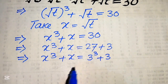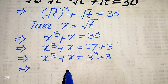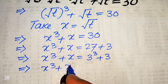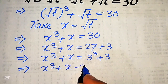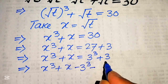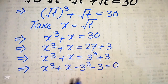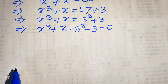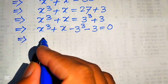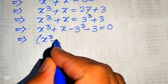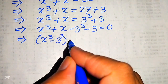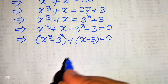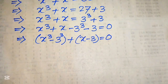In the next step we move the two terms from the right-hand side to the left-hand side. It becomes x cubed plus x minus 3 cubed minus 3 equals 0. We then make pairs of cubic terms with cubic terms, giving us: (x cubed minus 3 cubed) plus (x minus 3) equals 0.